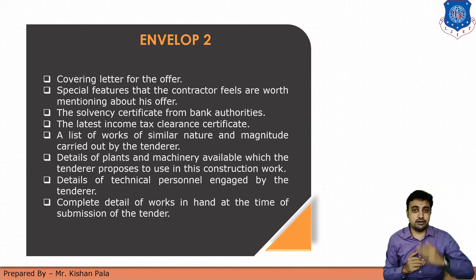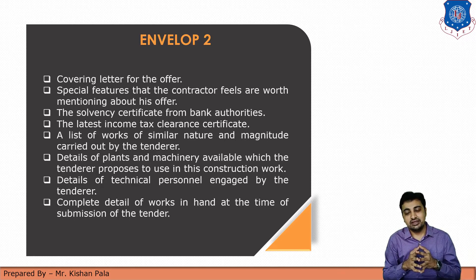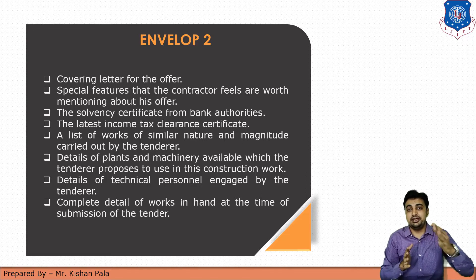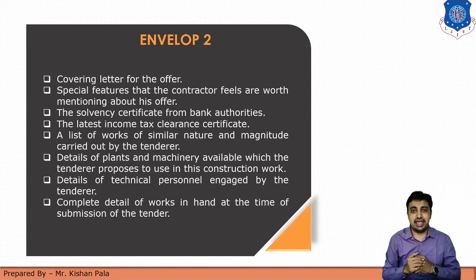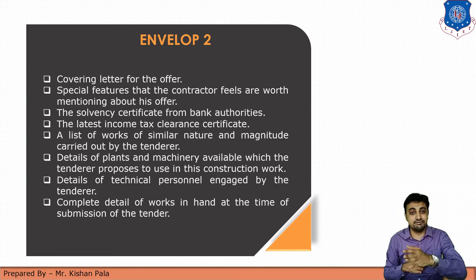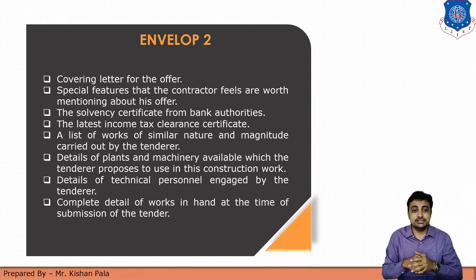Now let us discuss about envelope number 2. Envelope number 2 consists of the covering letter of the offer and the special features that the contractor feels are worth mentioning about his offer. The contractor has to give assurance that he will do the work with the required terms, conditions, and quality, and that he has financial capacity, commercial capacity, and resources like men and materials. This envelope should include a solvency certificate from bank authorities and the latest income tax certificates, so the client can judge the contractor's financial capacity.